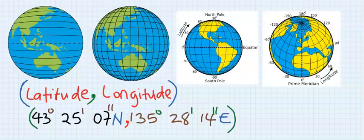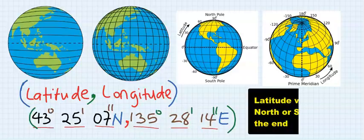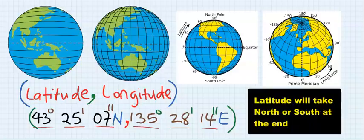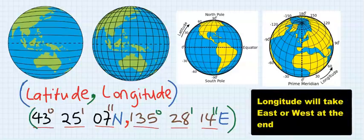Also, the longitude is written with east or west at the end. This coordinate is read as 43 degrees 25 minutes and 7 seconds north of the latitude, comma, 135 degrees 28 minutes and 14 seconds east of the longitude. Once you see a coordinate with north or south at the end, that is latitude. And if you see a coordinate with east or west at the end, that is longitude.